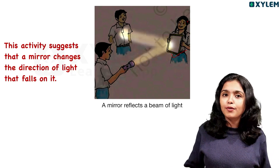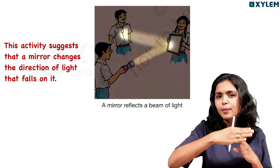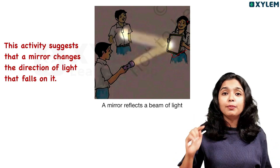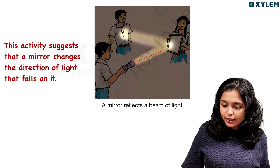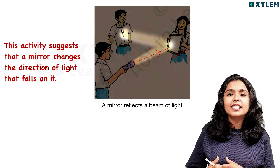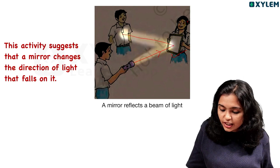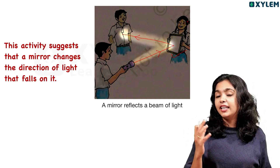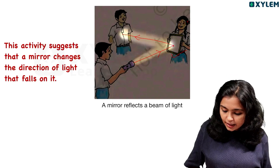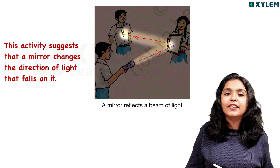For example, it is a beautiful beam of light. This is a beam of light. When you see the beam of light, it reflects the beam of light.